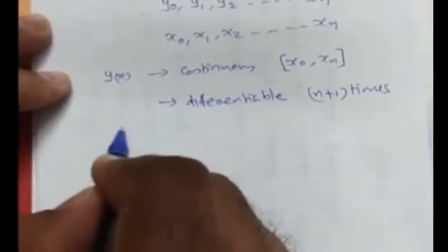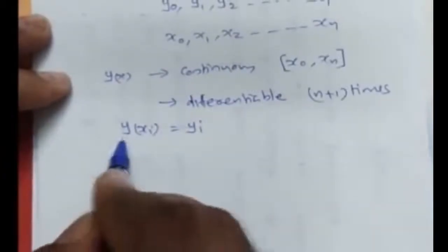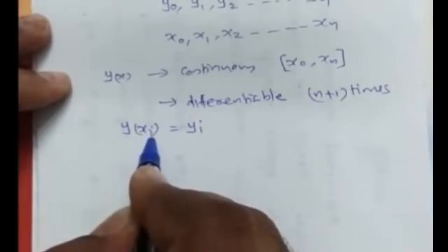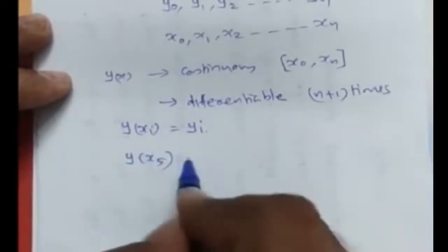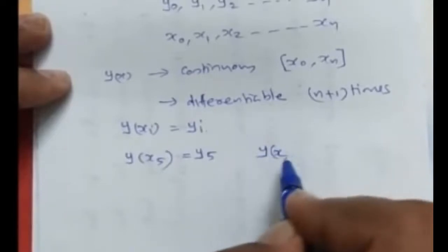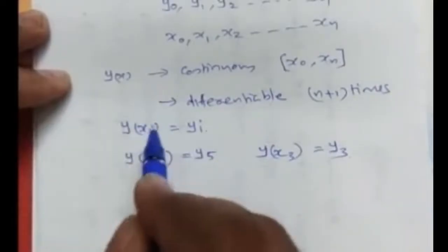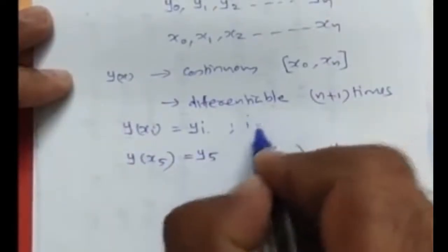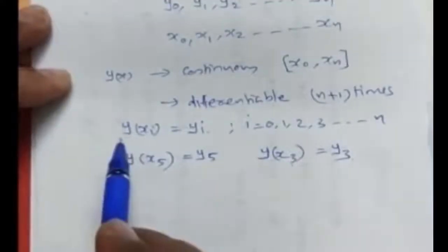We denote y(xᵢ) = yᵢ. For example, the value of y at x₅ is written as y₅, and the value of y at x₃ is written as y₃. So when you write yᵢ, that denotes the value of the function y(x) when x takes the value xᵢ, for i = 0, 1, 2, 3, ..., n. So y is clearly defined for n+1 values from 0 to n.